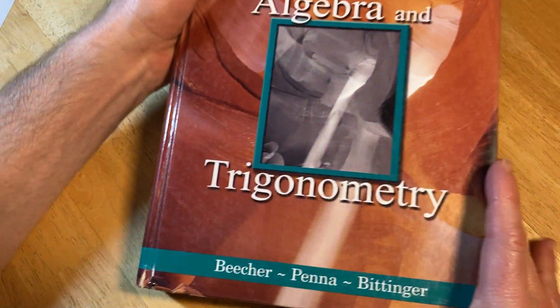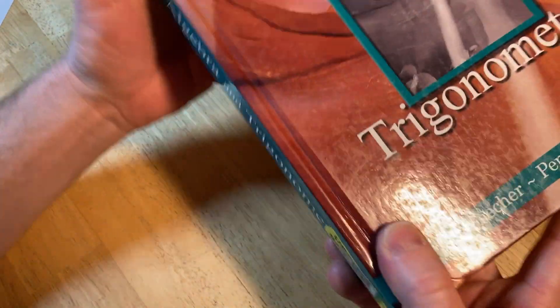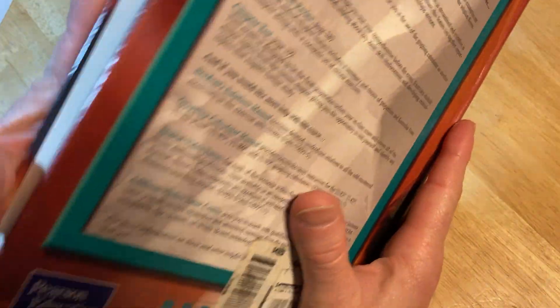This one is called Algebra and Trigonometry by Beecher, Penna, and Biddinger. I got this one used. I will try to leave a link in the description in case you want to check this book out.